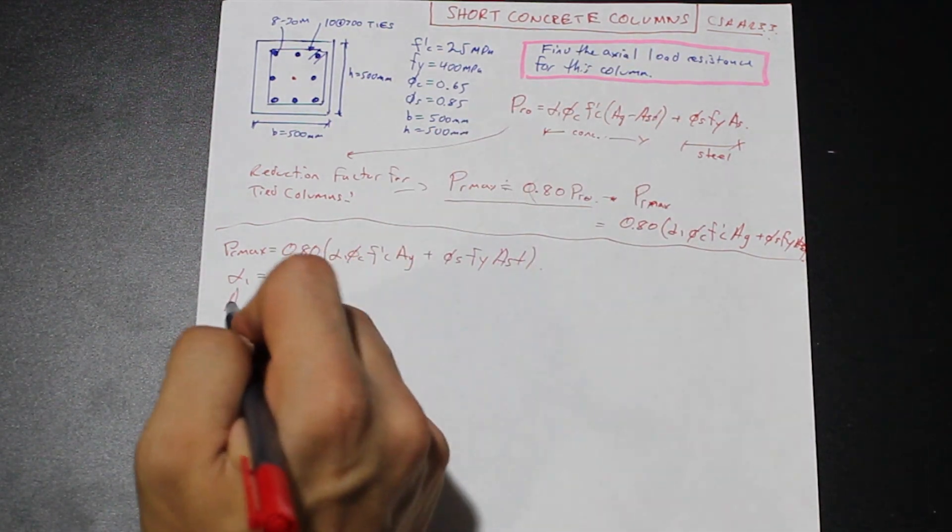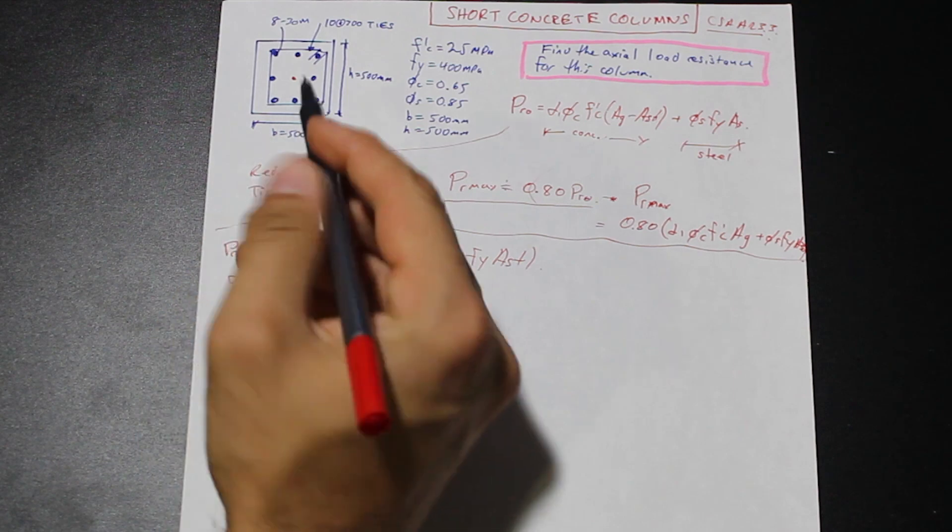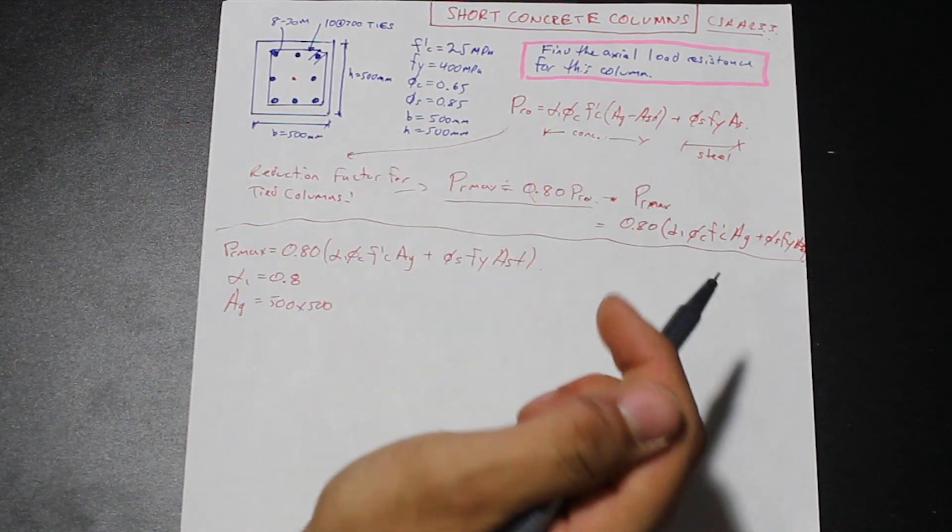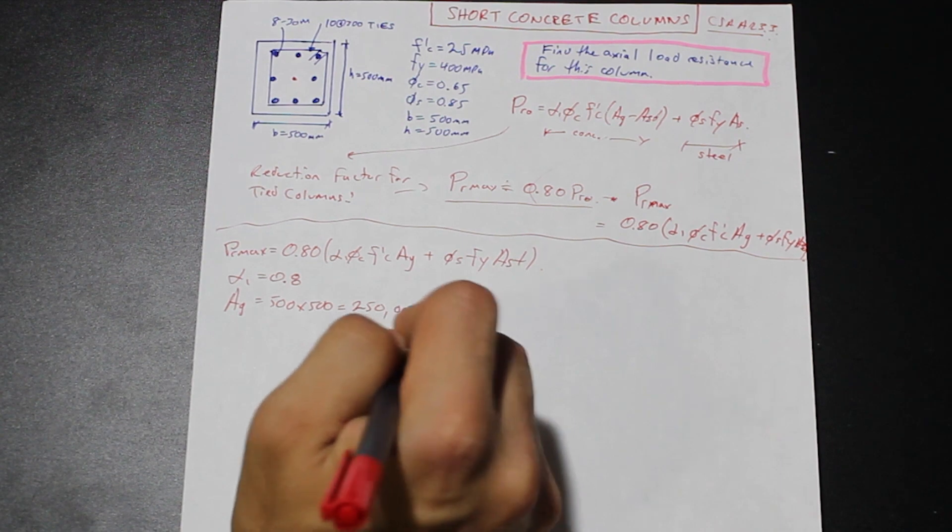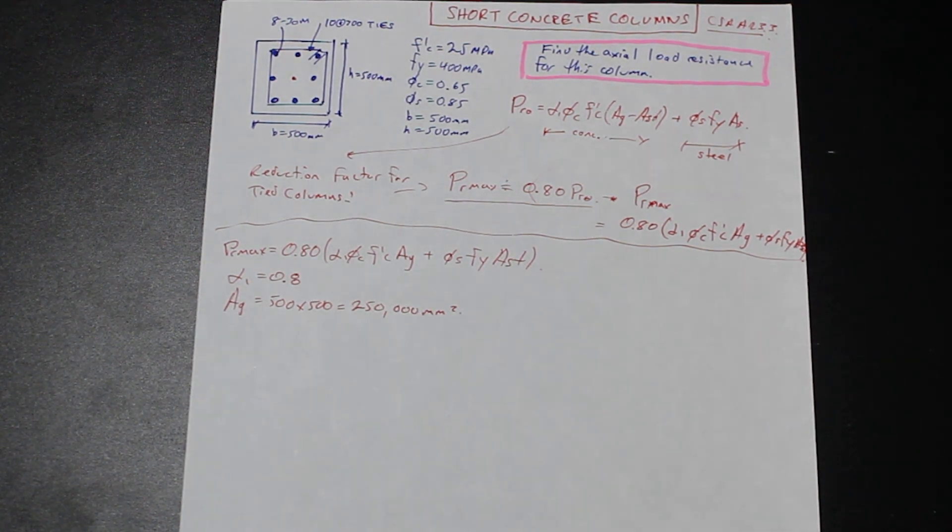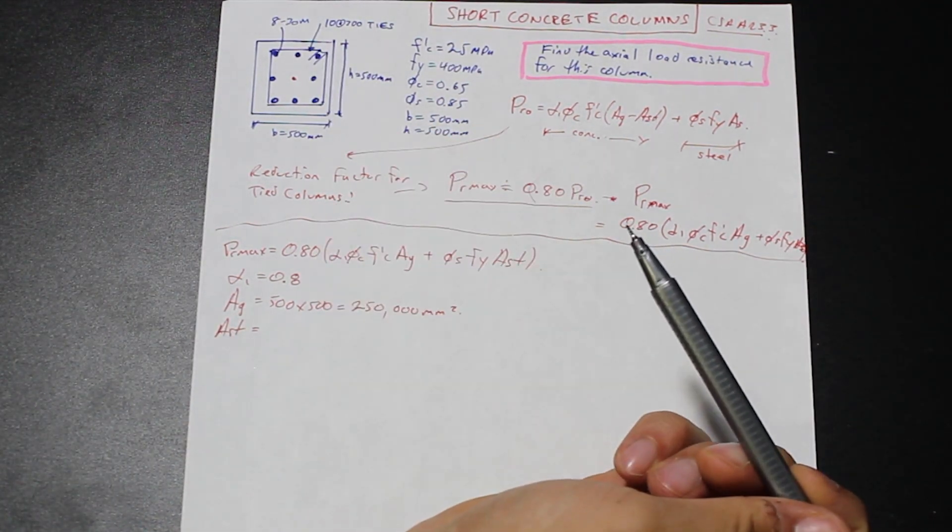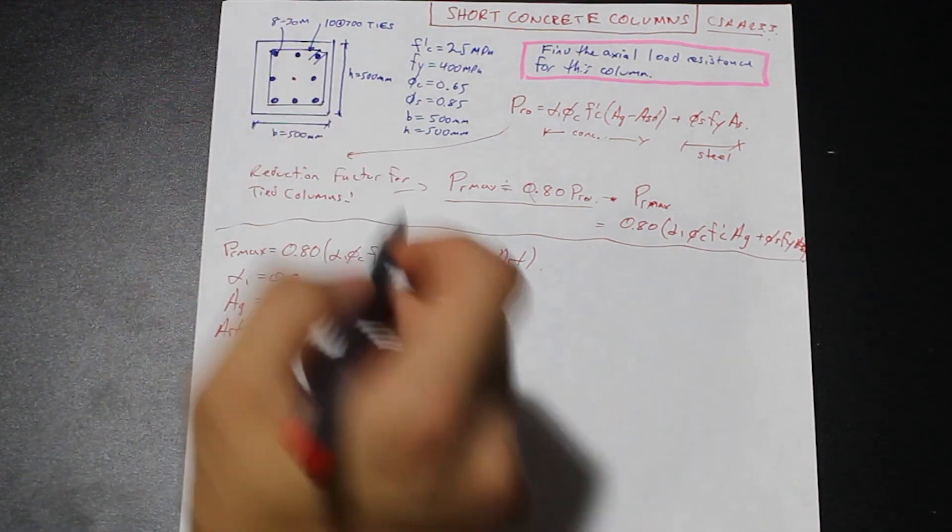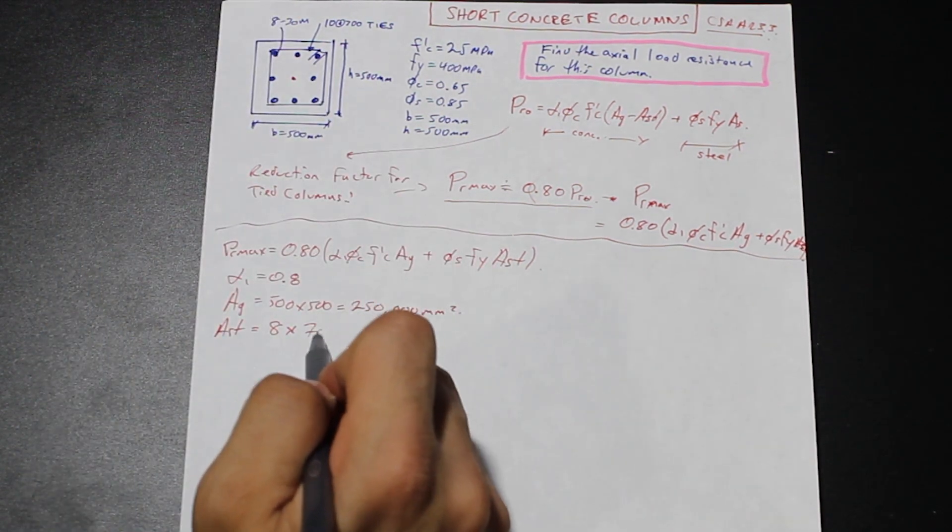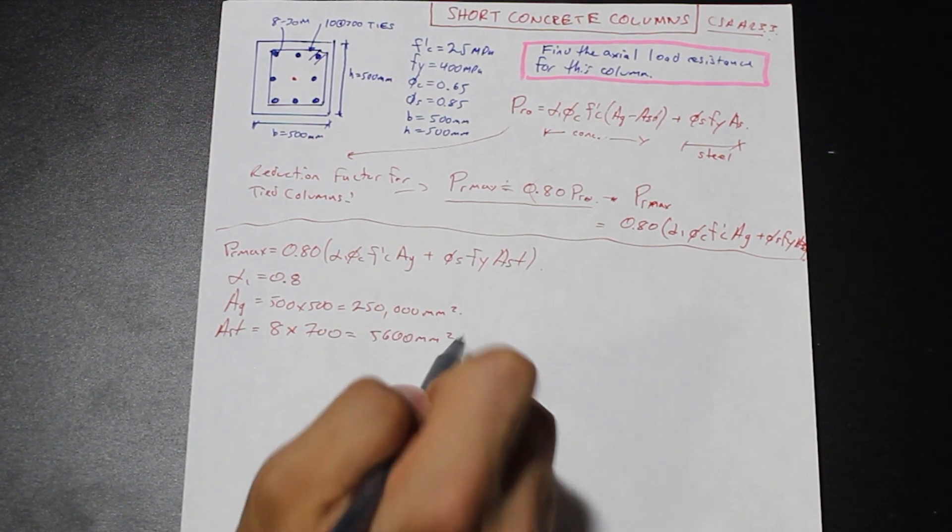We have phi_c, that's given to us in the question. We have the concrete strength and we have our gross area. So gross area is going to be 500 times 500 in millimeters squared, and that's going to give us 25,000 millimeters squared of area of concrete. And what else do we need to calculate? Well, we need the area of steel. The area of steel, we know that the 30M bar has 700 millimeters squared of area. And we have eight of them in this concrete column. So we're going to multiply this by 700. We're going to get 5600 millimeters squared of steel in our column.